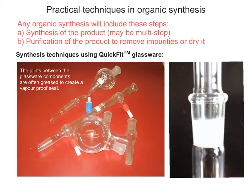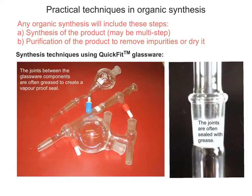Here's a picture of some of the glassware we commonly use. You can see the joints have a special kind of surface on them — and you can grease the joints so you can create a good seal. I'm going to label up some of the pieces of glassware and then explain a little bit about each of them.